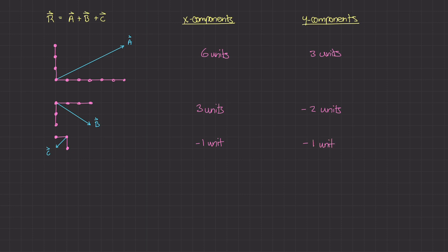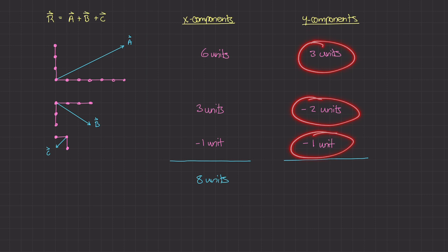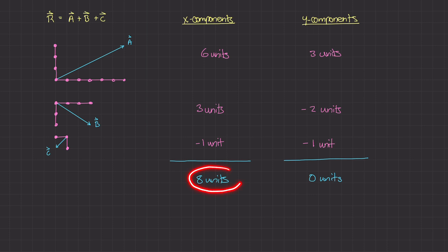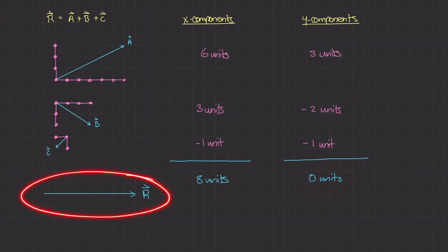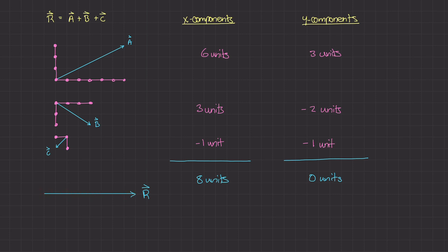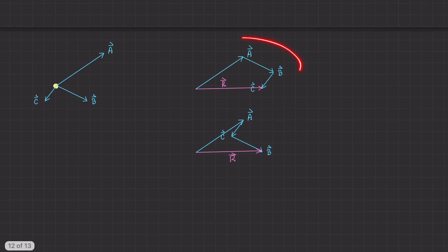Now if I add all the x components together and the y components together, I get two values. Six plus three plus negative one equals positive eight units in the x direction. In the y direction, three plus negative two plus negative one equals zero. So the resultant vector is eight units to the right and zero units vertically — counting out eight units to the right from the tail confirms this. The resultant vector acts exactly to the right, just as it did in the last video.